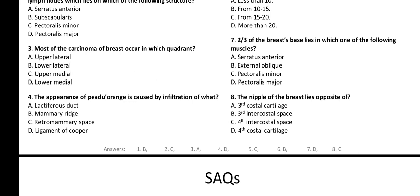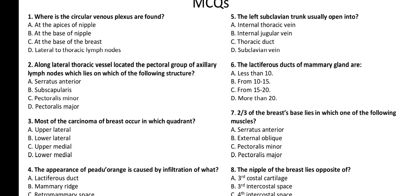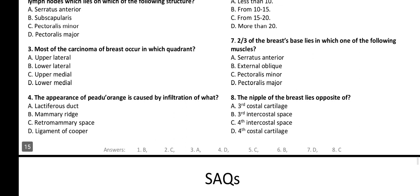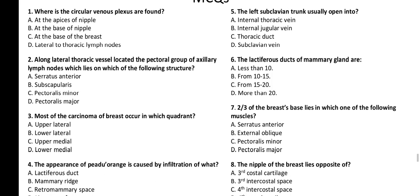Let's take corrections. My number one was C, but the answer is B — the circular venous plexus is at the base of the nipple. Make sure you have watched my previous video on the anatomy of the human breast, as this is just the MCQ revision for that video. Number two: The pectoral group lies on the pectoralis minor — I almost got that wrong.